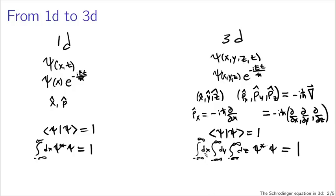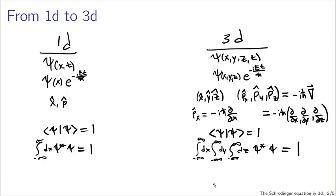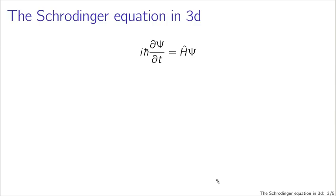So for every one-dimensional structure we end up with a three-dimensional counterpart. Our wave function is going to be a function of multiple variables, and consequently we're going to have to keep track of multiple coordinates and derivatives with respect to multiple variables. And when we do things like normalize or calculate expectation values, we're going to have to be integrating over multiple dimensions.